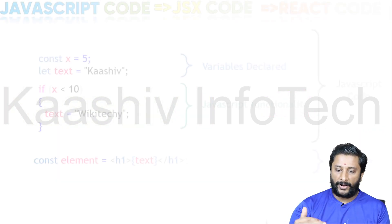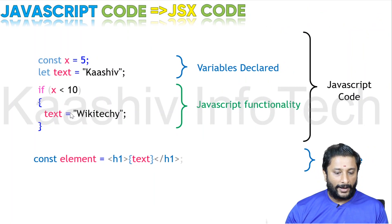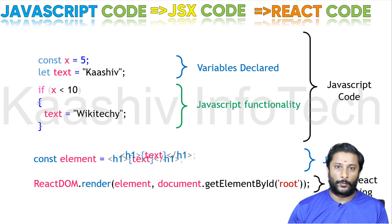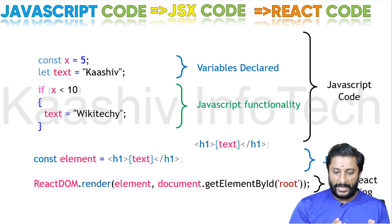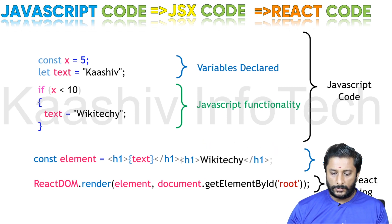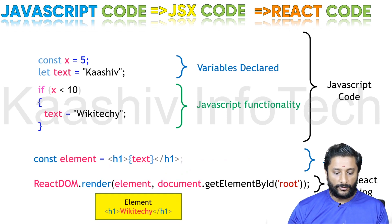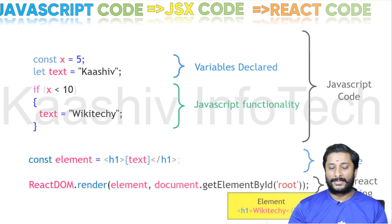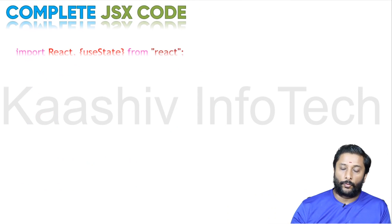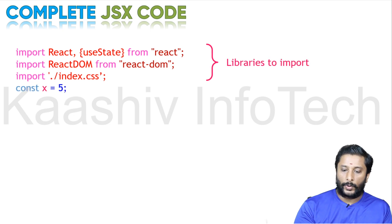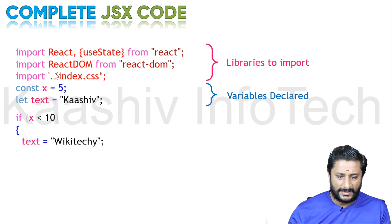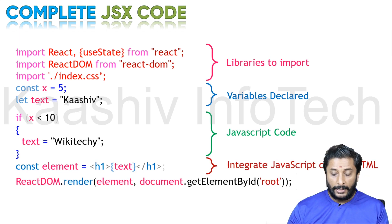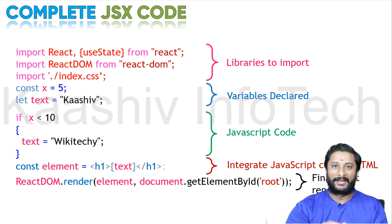Here is the final piece of code. I got the JavaScript, I got my JSX code, and I got my final React rendering code. You can see here I got my h1 text of 'WikiTeki' — that is set in the element. From here, the element is moving on and placed in root. This is how the entire React technology works. I got my libraries for React and ReactDOM. Variables are declared, JavaScript code is given, integrating JavaScript code with HTML — the final React rendering is completed.